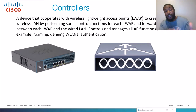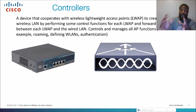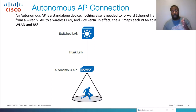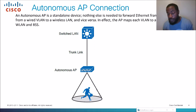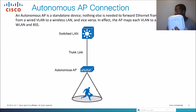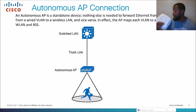On the left-hand side of the screen is a physical view of a wireless controller; on the right-hand side is the logical view — what it looks like on a network map or topology. Now let's talk about the difference between lightweight mode and autonomous mode. I just bought this access point on eBay, so maybe I'll do another video on access points.